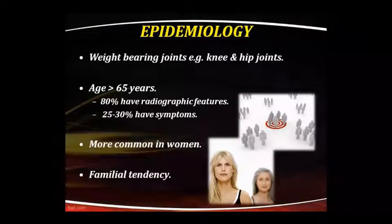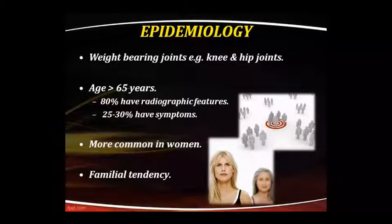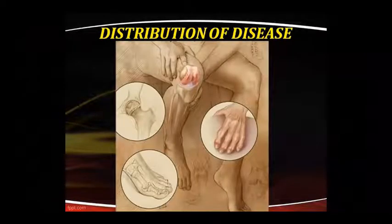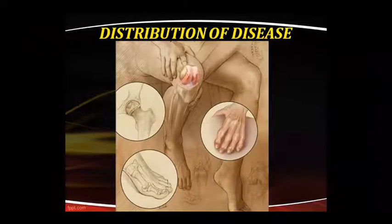Now for epidemiology: the weight-bearing joints affected are the knee, hip, and so on. After age 65 years, 80% show radiographic features and 25-30% are symptomatic. It is more common in women, and there is a familial tendency. The disease distribution can be seen in the angles and bones.